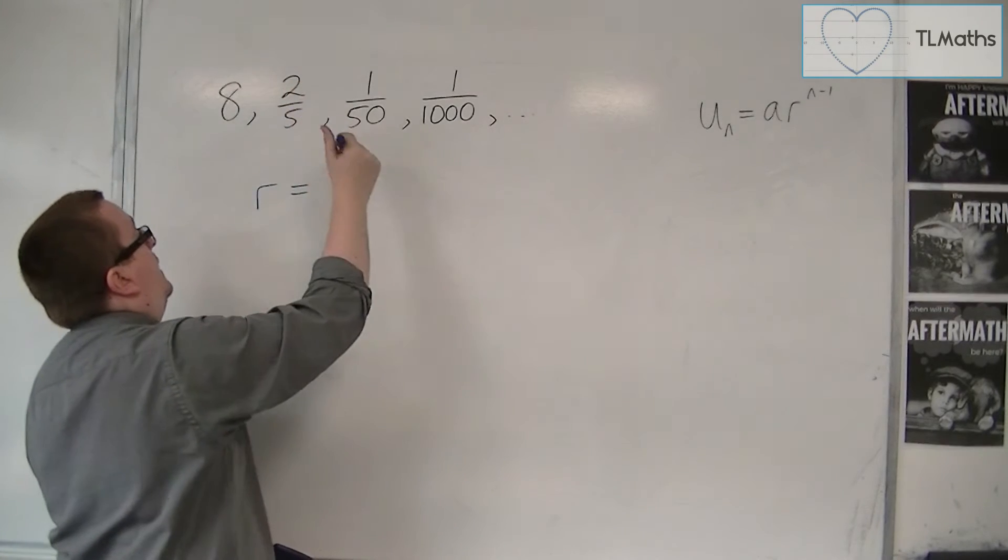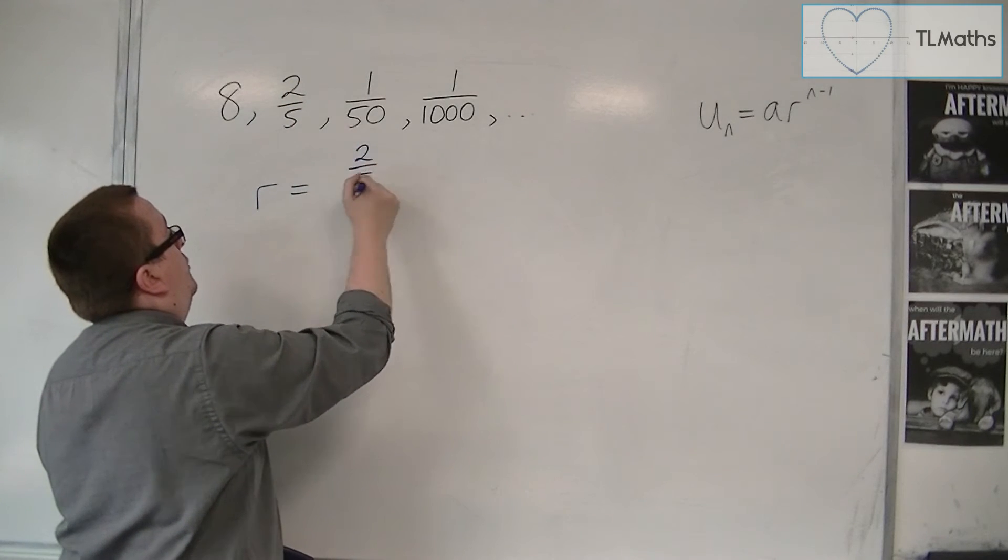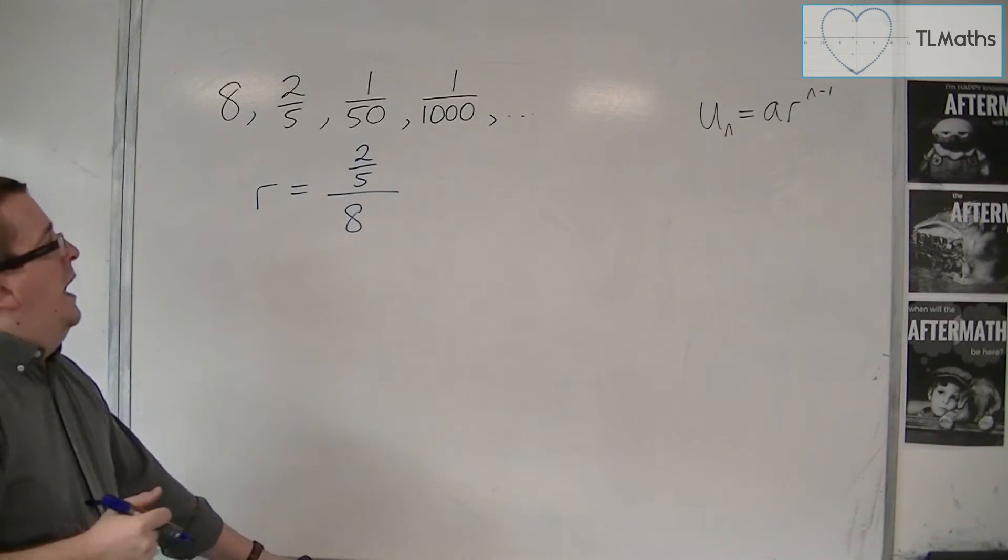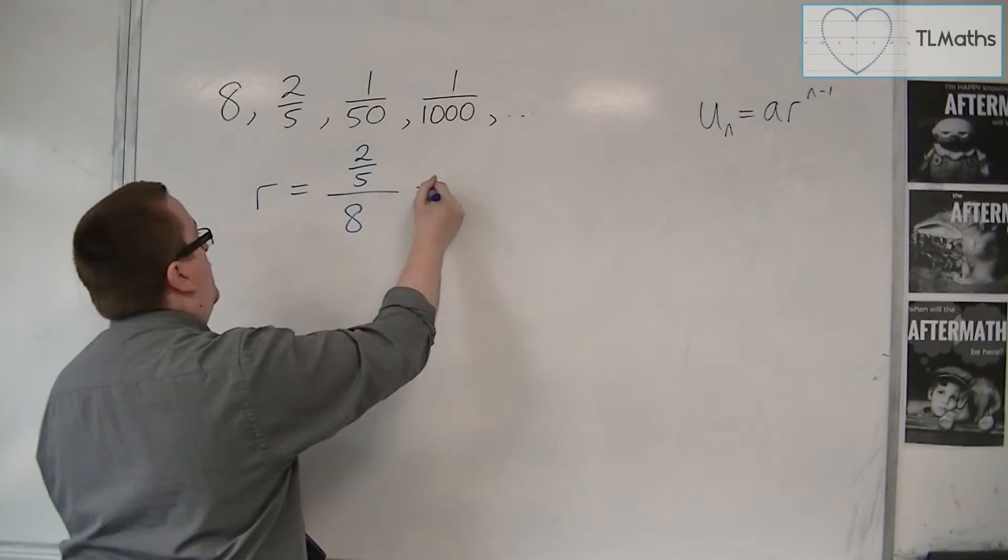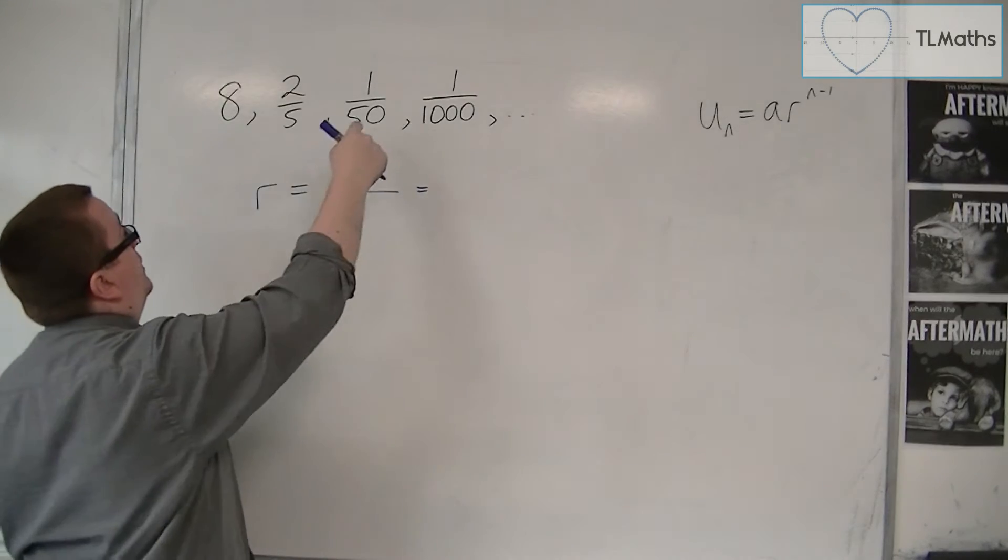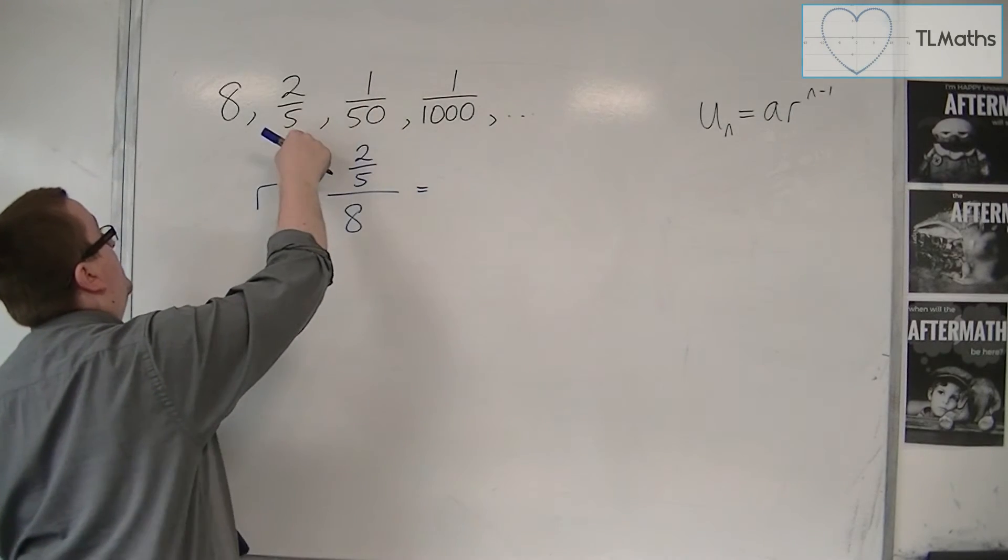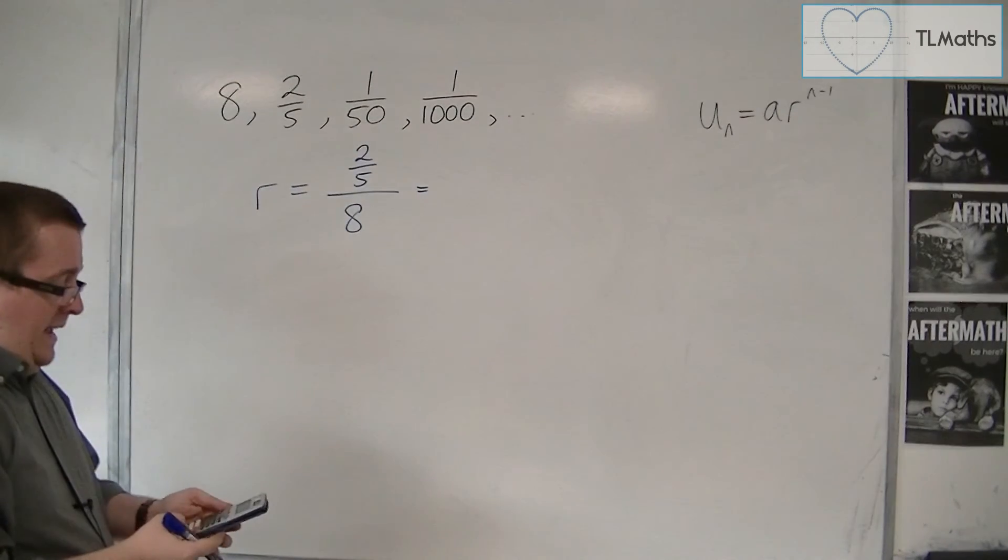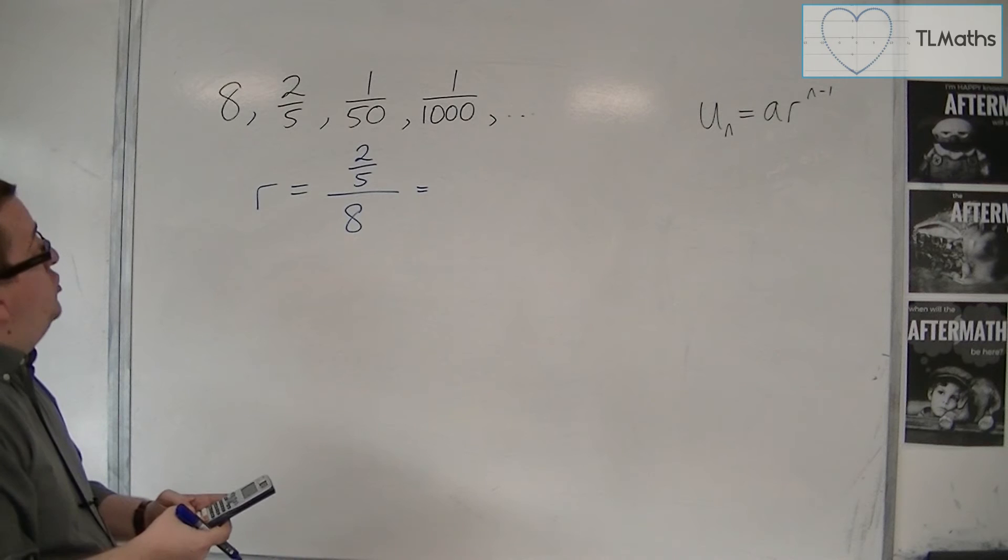So we can do 2 fifths divided by 8, and that will get me the common ratio. Or you could have done 1 fiftieth divided by 2 fifths, or 1 one thousandth divided by 1 fiftieth. It doesn't matter which two you choose.